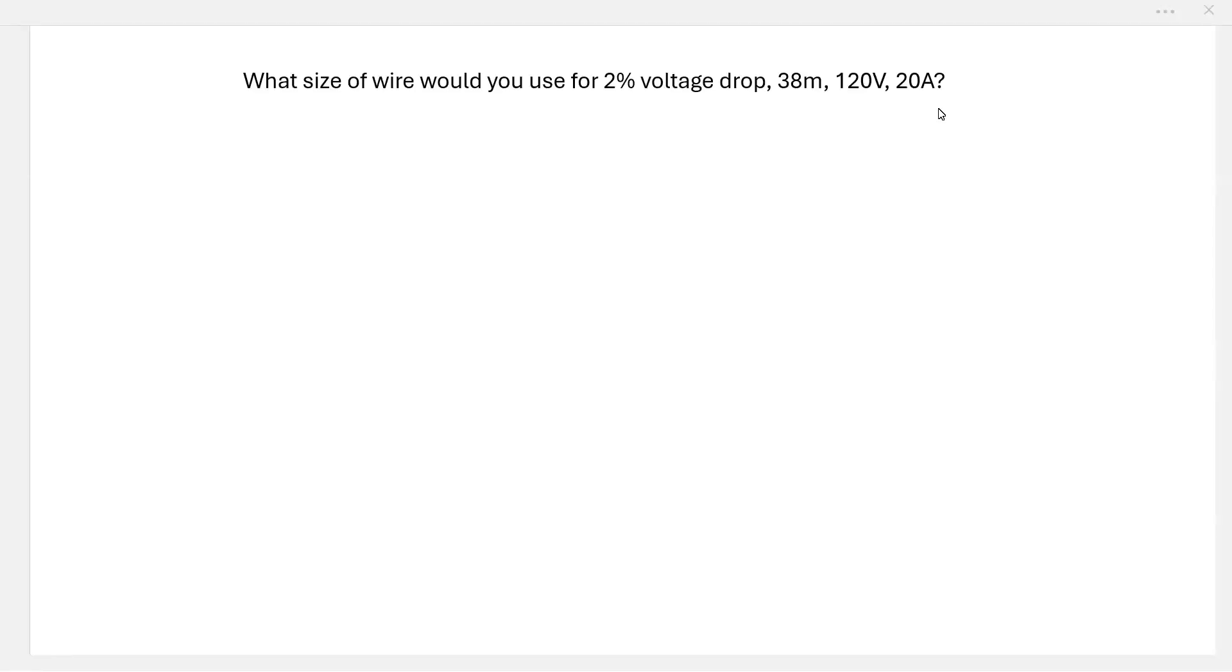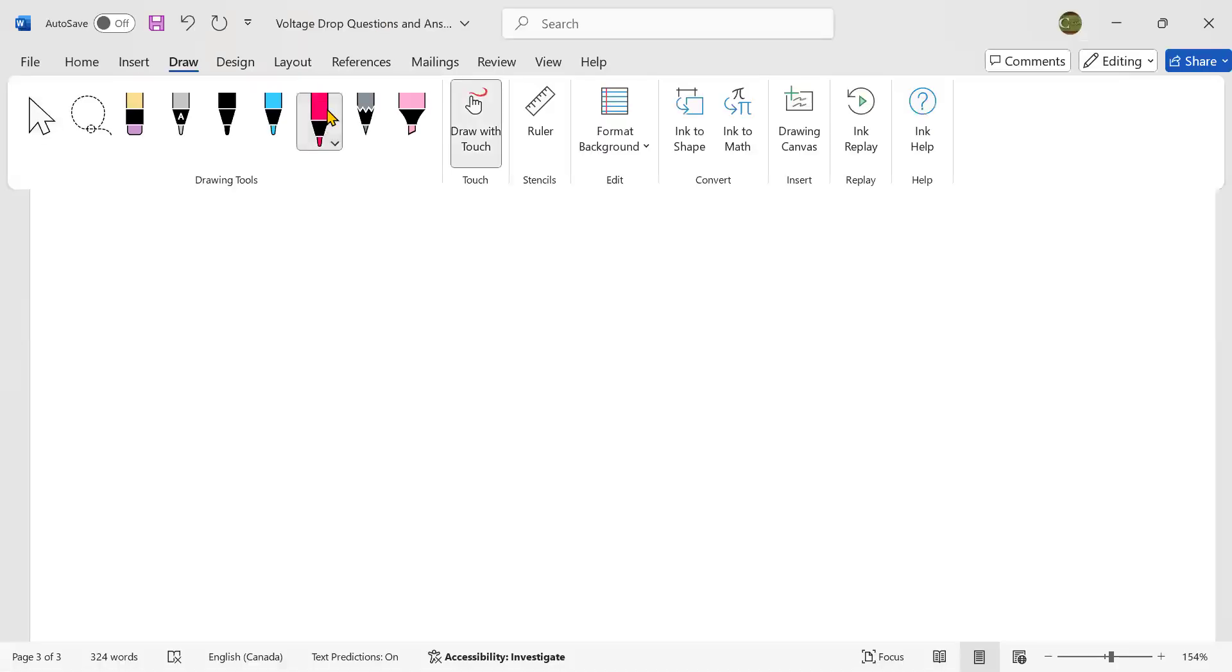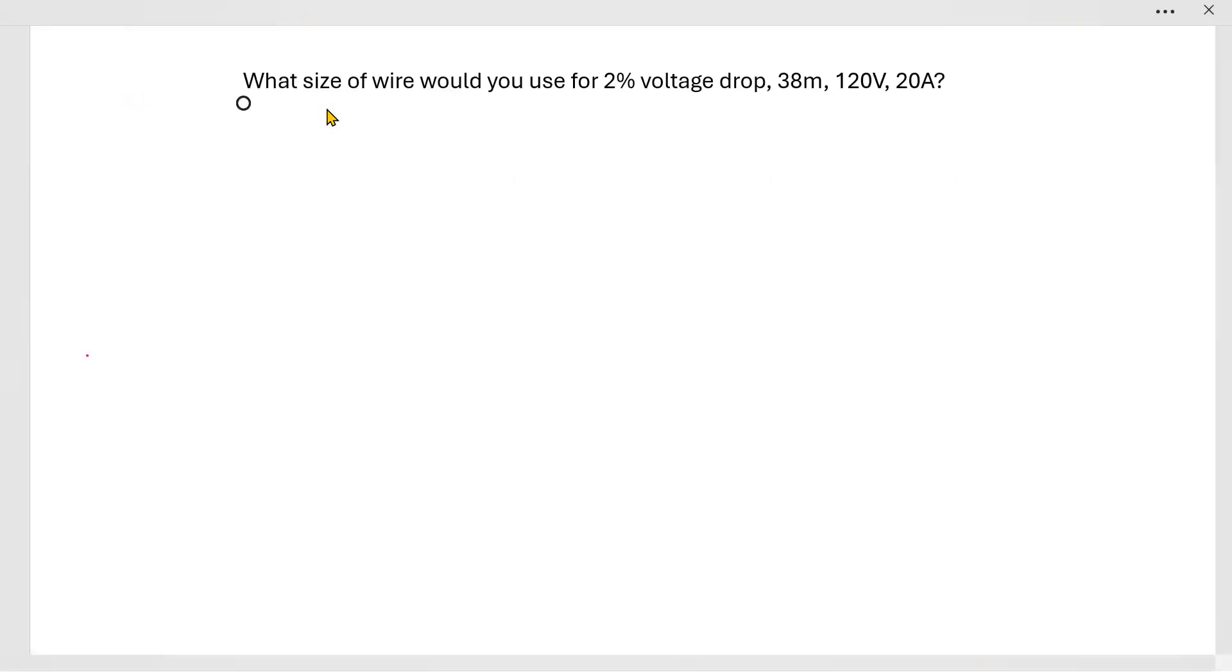Hello, lots of people are asking me about how to do a voltage drop question when you need to find the size of a wire given a certain voltage drop. This is a typical type of exam question when you're doing a Canadian Electrical Code exam. What size of wire would you use for a 2% voltage drop that is running 38 meters at 120 volts for a 20 amp load?